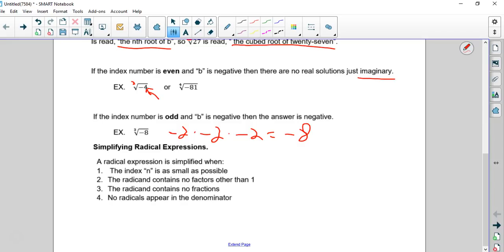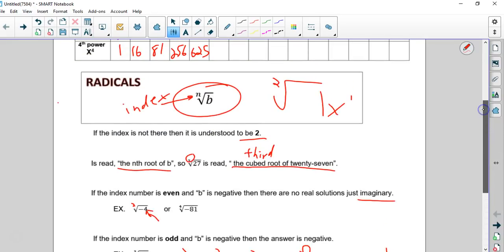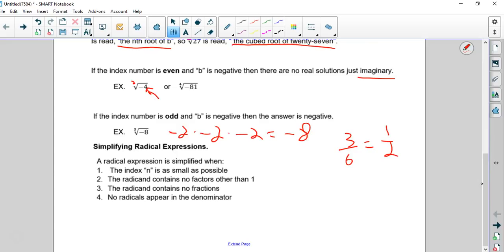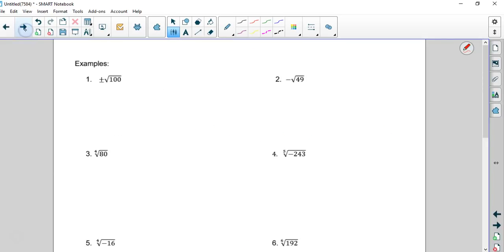So here's what we're going to do. We always want to have our radicals simplified. Just like the fraction 3/6, we reduce to one-half. It's the same concept. We want to reduce radicals. We want the index n as small as possible. The radicand, that's the thing inside, contains no factors other than 1. The radicand contains no fractions. And no radicals appear in the denominator.